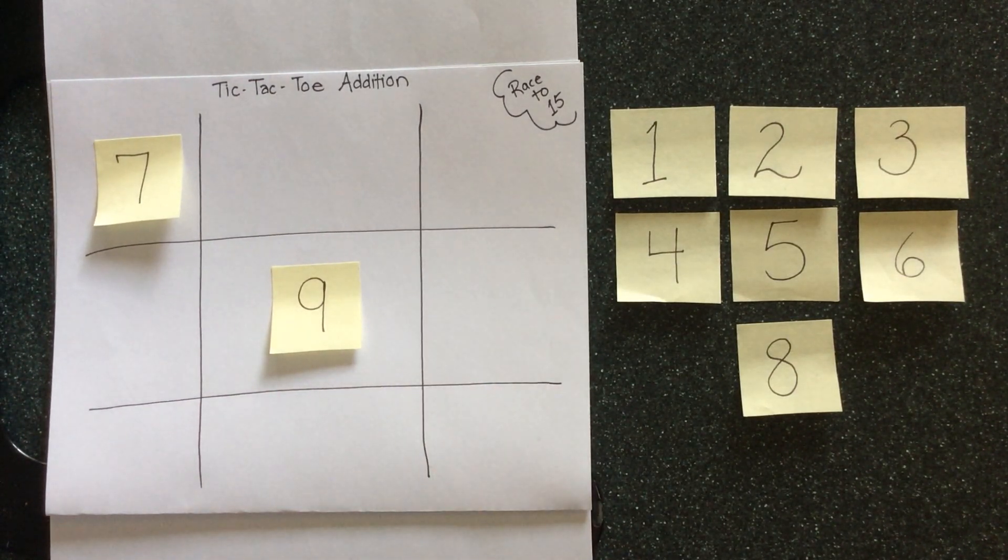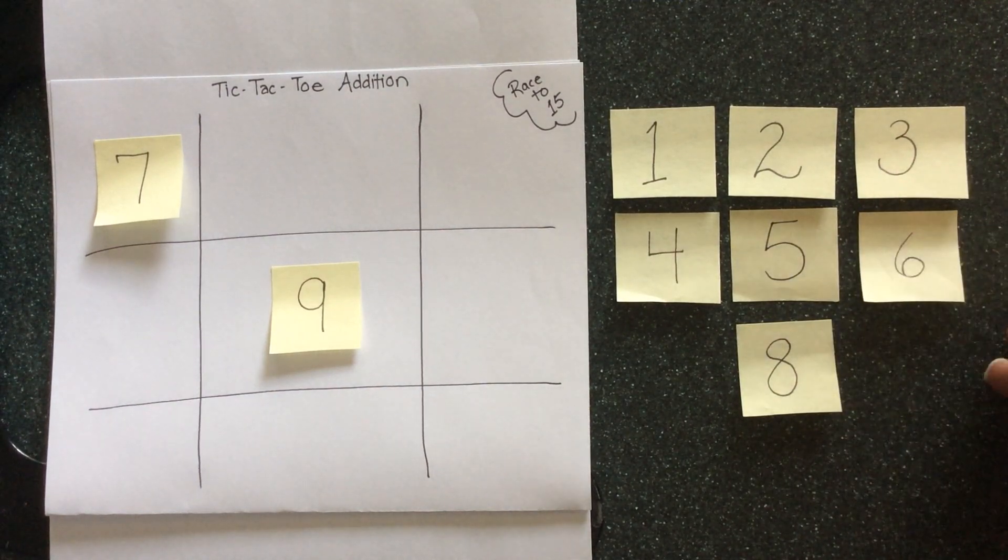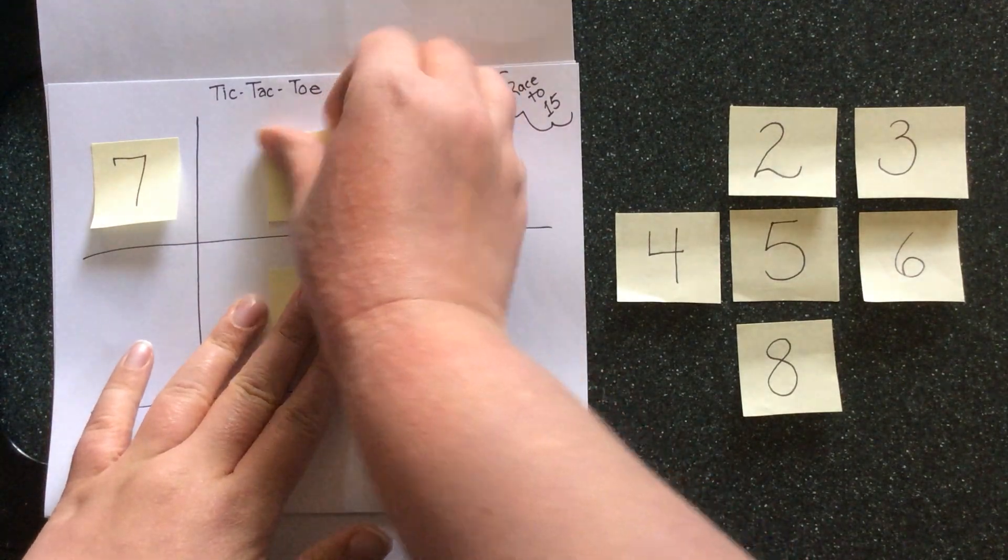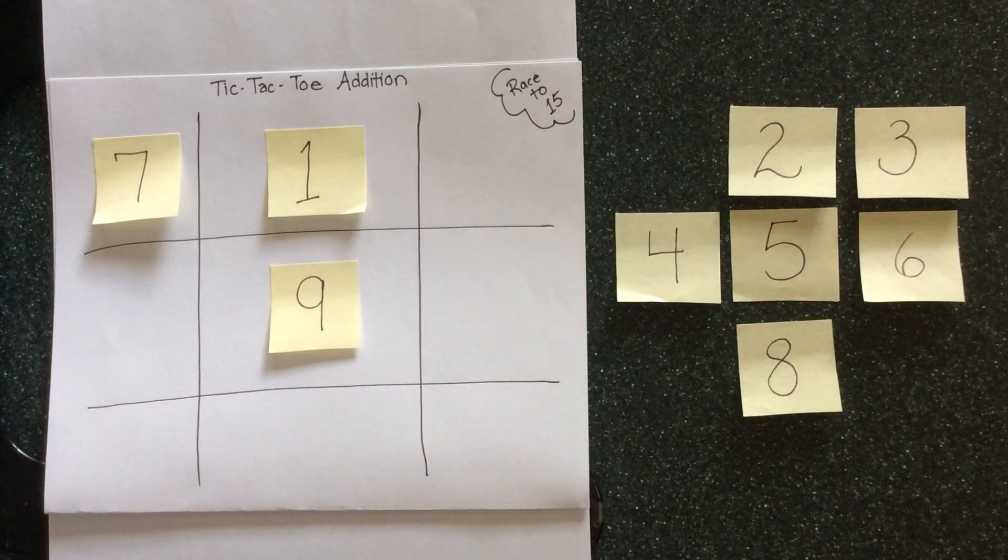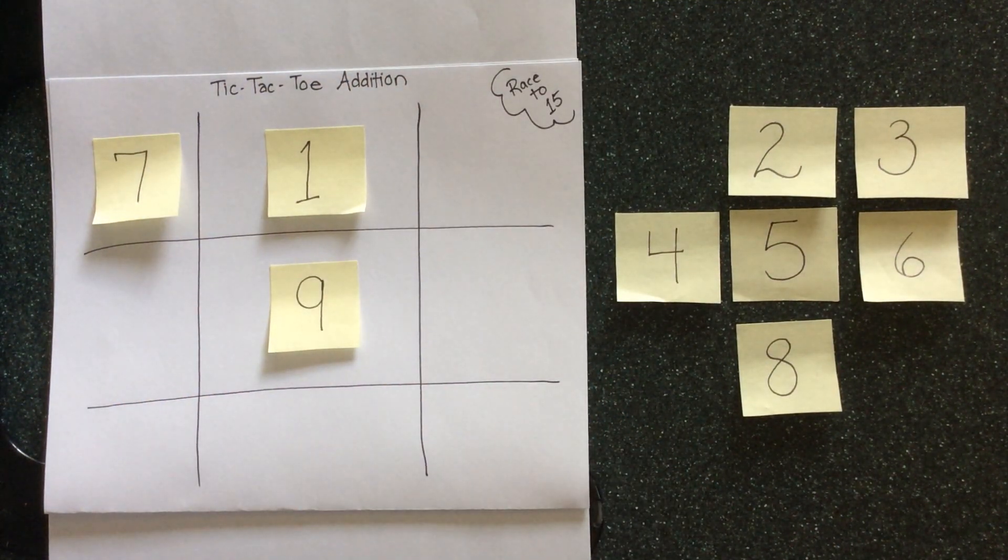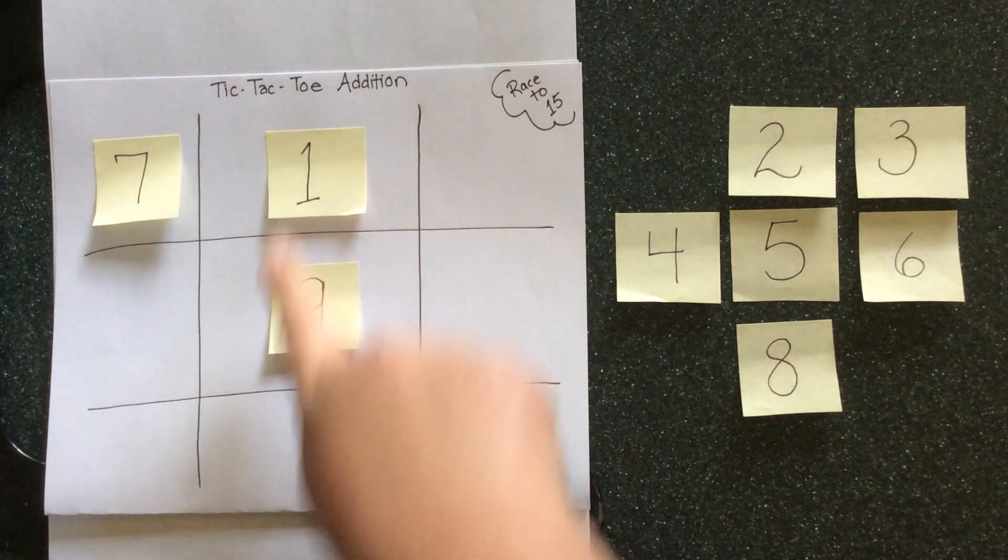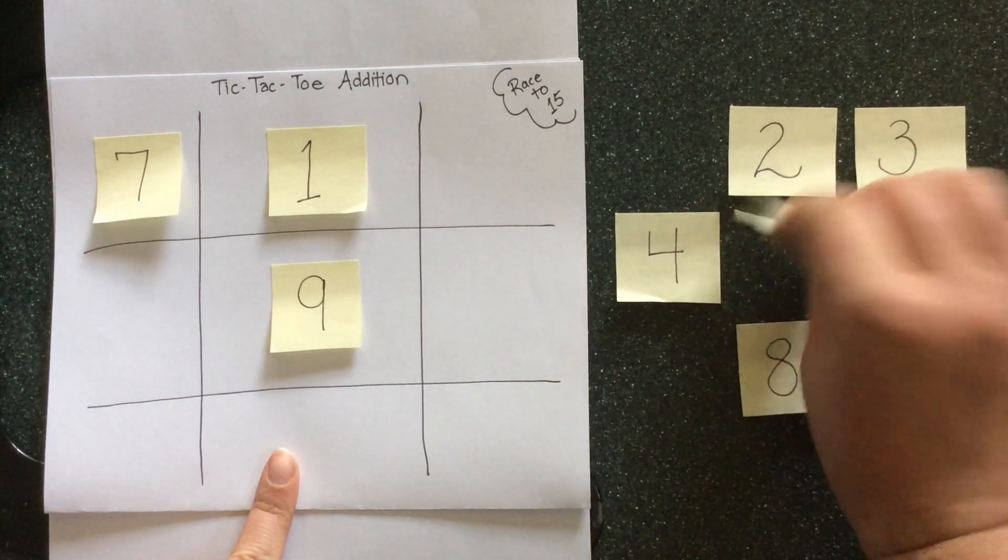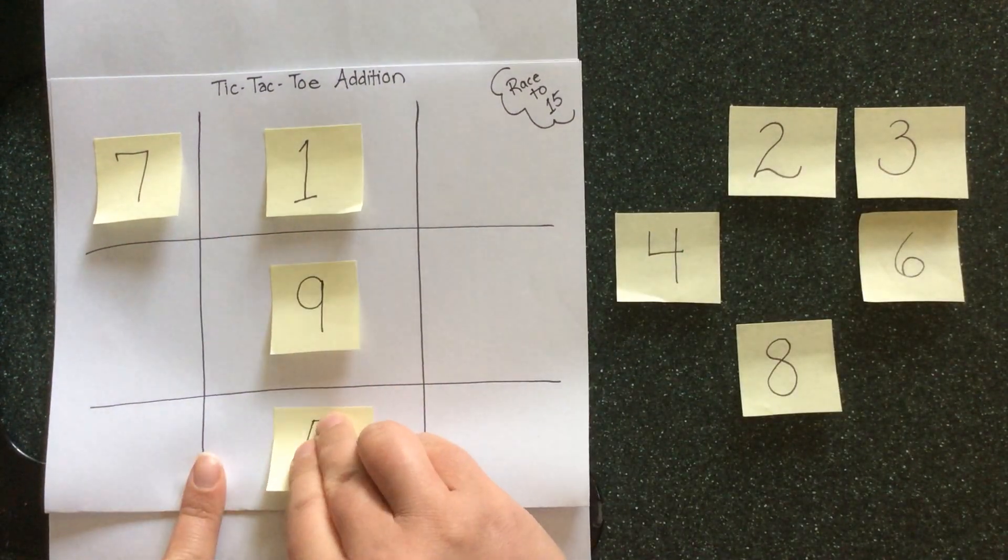So then it would be the next person's turn and they might decide to put a 1 right here, and if they did that then it means that I probably can win this because 9 plus 1 equals 10 which means I just need to put a 5 in this spot here and I win.